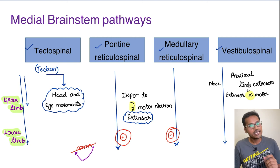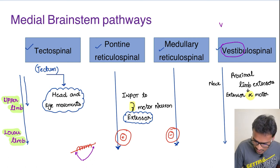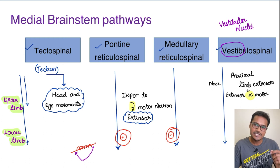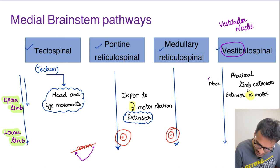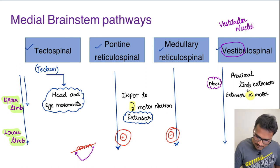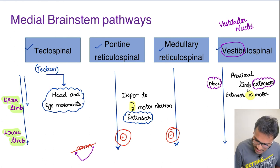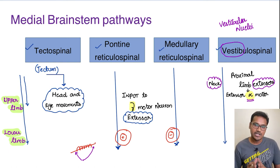The gamma motor neurons innervate the ends of intrafusal fibers. They don't directly contract the muscle but cause alpha-gamma co-activation and indirectly contract the muscle. Now coming to the vestibulospinal tract: it arises from the vestibular nucleus and, along with the cerebellum, helps in balance during movement. It goes all the way to the lower limbs, primarily innervating neck muscles and proximal limb extensors — directly innervating alpha motor neurons, so it is capable of directly causing alpha motor extension.